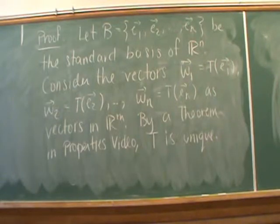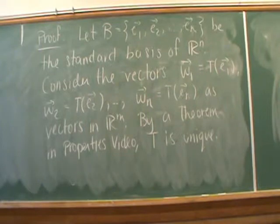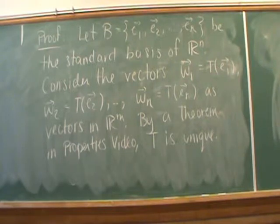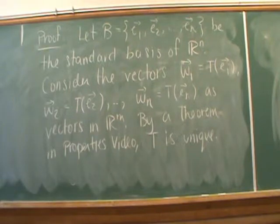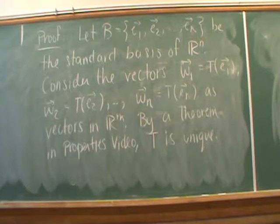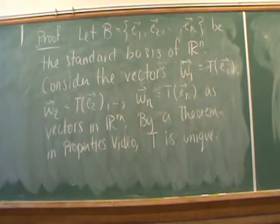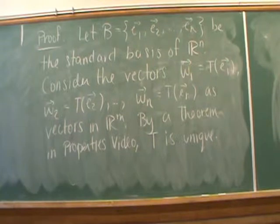To prove Theorem 1, first I'm going to deal with the uniqueness aspect. We're going to consider the standard basis of Rn and consider vectors in Rm. We'll call them W1, W2, up to Wn, where W1 is T of E1, W2 is T of E2, all the way up to Wn is T of En. By a theorem from the properties video, T is a unique linear transformation.